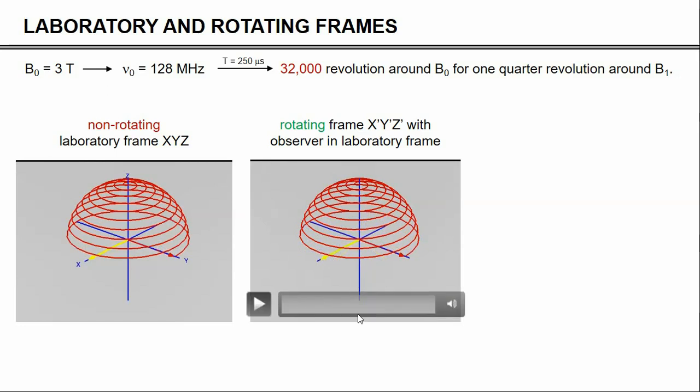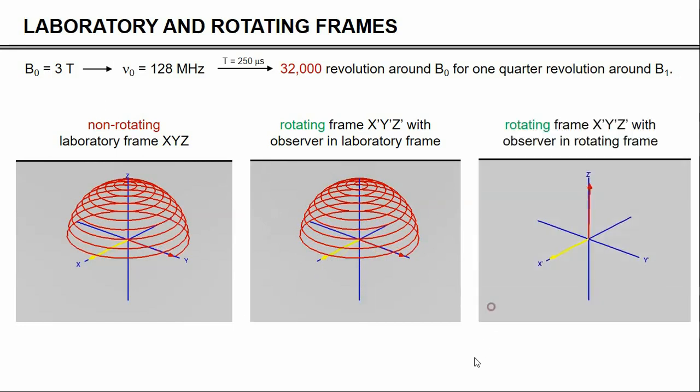Things will get a lot easier if you, the observer, are going to sit inside the rotating frame, right there at the end of the B1 field vector. Then you're rotating with the B1 field, and therefore that rotation is no longer visible to you. And you're going to get this very simple rotation, where the magnetization simply rotates around the B1 field. And it gets fully excited, as you can see here. So basically, every RF pulse that we're going to discuss from here on out is always going to be visualized in a rotating frame, because motions are just much easier to understand in a rotating frame.